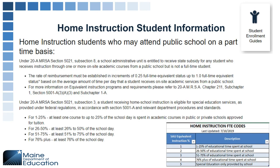Home instruction students can be counted for subsidy if a student attends public school on a part-time basis. They can be counted in 25% increments depending on how much time they're spending at the school. If a student is not attending school at all and is not coming in for any academic credit, they should not be enrolled in State Synergy — they should be exited to home instruction. But if they are attending and receiving credit for a portion of the day, they can be entered for subsidy purposes.